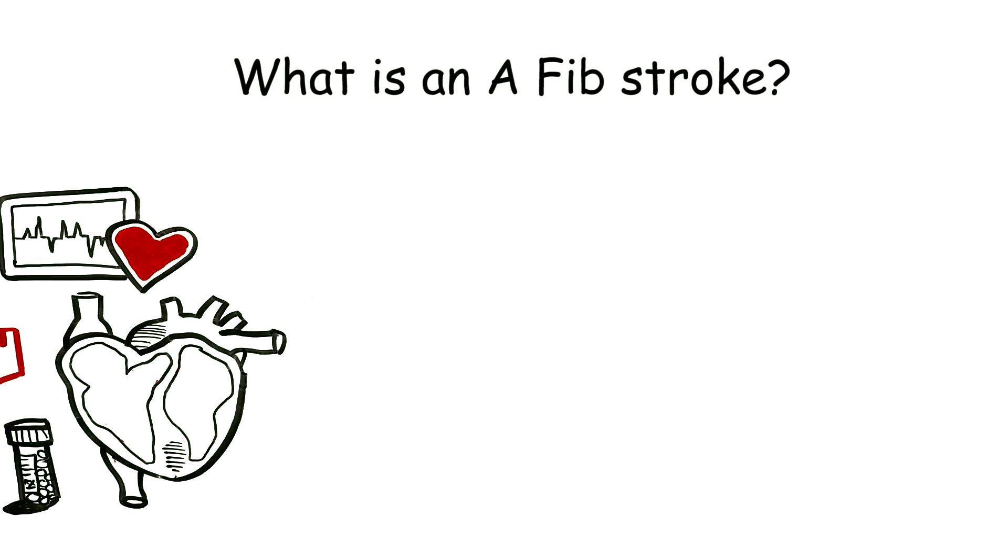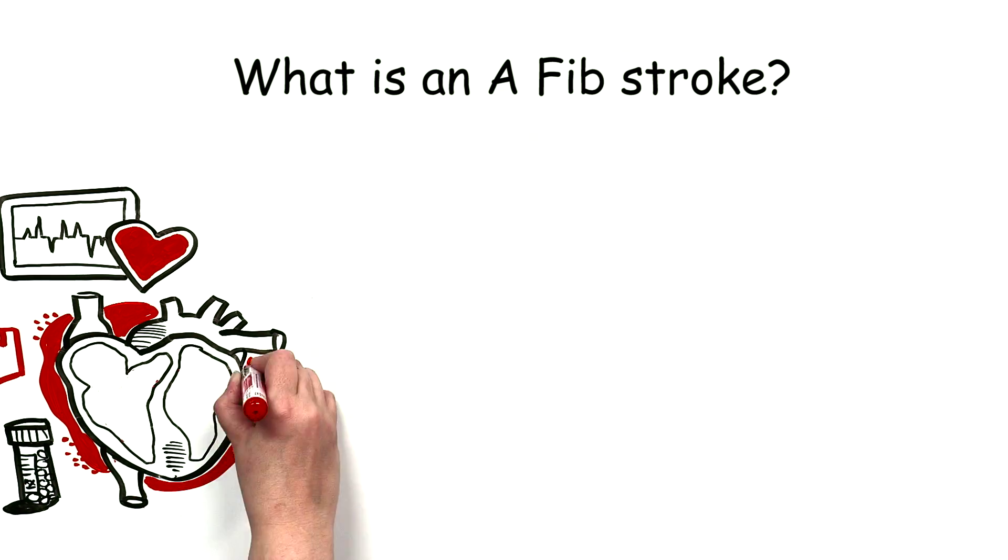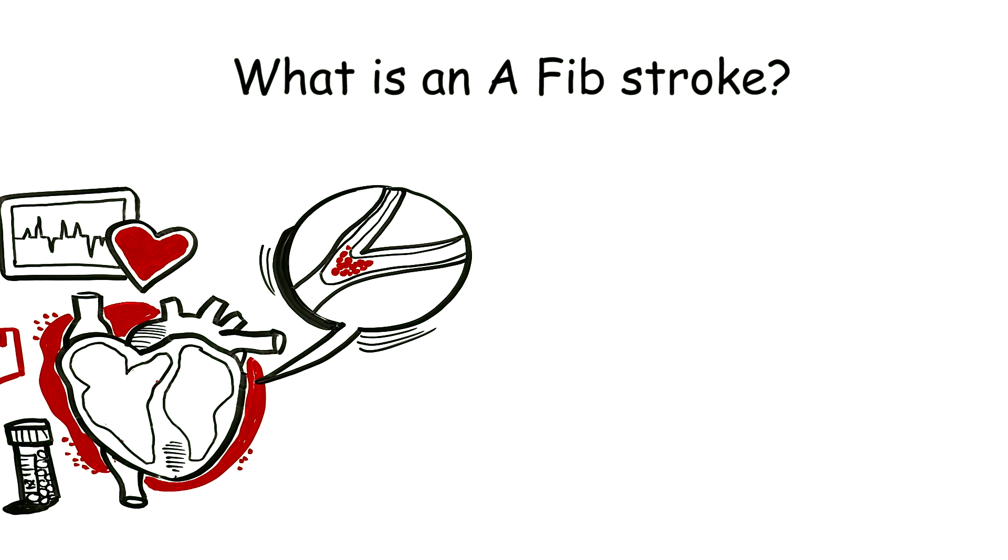What is an AFib stroke? Most commonly, a blockage in an artery preventing blood flow to the brain. In the case of AFib, this blockage comes from a clot that has travelled from the heart.